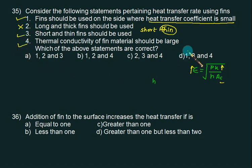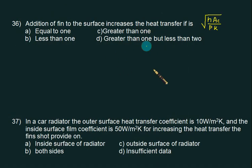Addition of the fin to the surface increases the heat transfer. If you have given this value under root of HAC by PK, basically it's one upon effectiveness. Addition of fin is always selected for effectiveness greater than one. Since we want effectiveness greater than one, this term should be less than one which is the reciprocal of effectiveness. So choice B is correct.